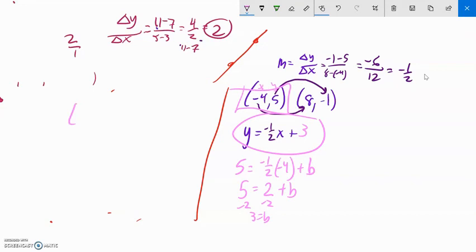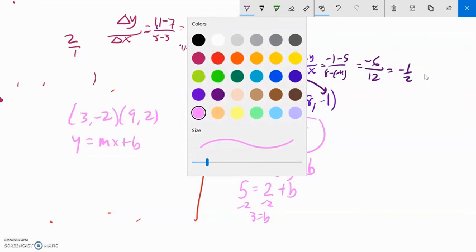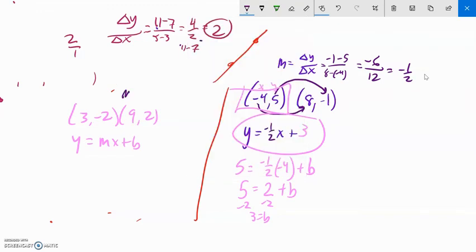All right. Let me do one more like this then. I could have the points 3, negative 2, and 9, 2. I'm going to write my equation in the form y equals mx plus b. So let's find that slope. Slope. Change in y over change in x. Negative 2 to 2. See how it went up 4? 2 minus negative 2 is 4. Change in x. 3 to 9 minus 3, it went up 6. So 4, 6 is 2 thirds. So my slope is 2 thirds.